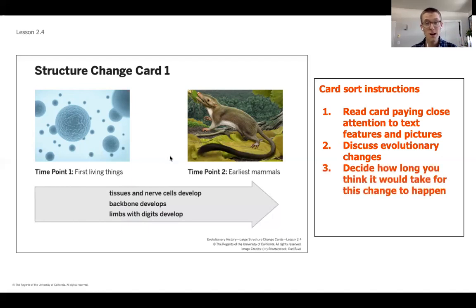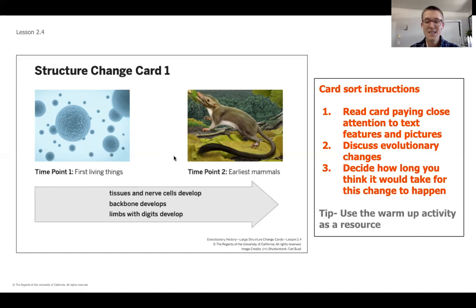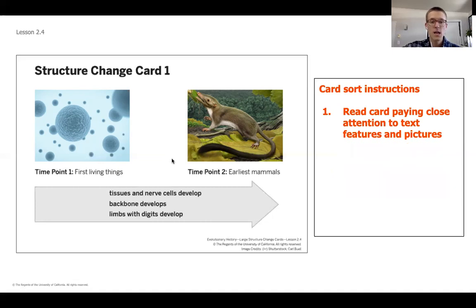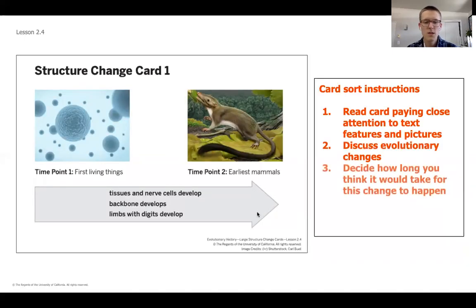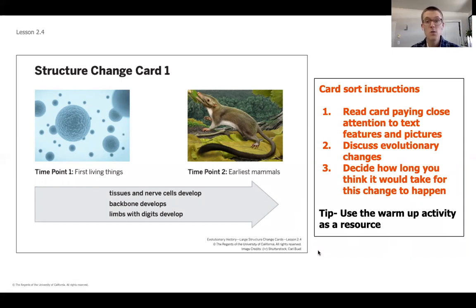Those are the evolutionary changes that you should look for on the next few cards — that's your step two. Step three is why at the beginning of the lesson I said you might want to use a pencil, because you're going to need to think about how long do you think it would take for this change to happen. Do you think this is something that's going to take a shorter period of time or a longer period of time? That's going to determine where you put it on your timeline. If you think it would have taken a really long time for that change to happen, you're going to put it closer to the left. If you think it was somewhere in the middle, put it in the middle. Or if you think it didn't take a lot of time, put it on the shortest. You spent some time at the beginning of this unit working on that timeline in the warmup — use that as a support as you go through this. That can be really, really helpful.